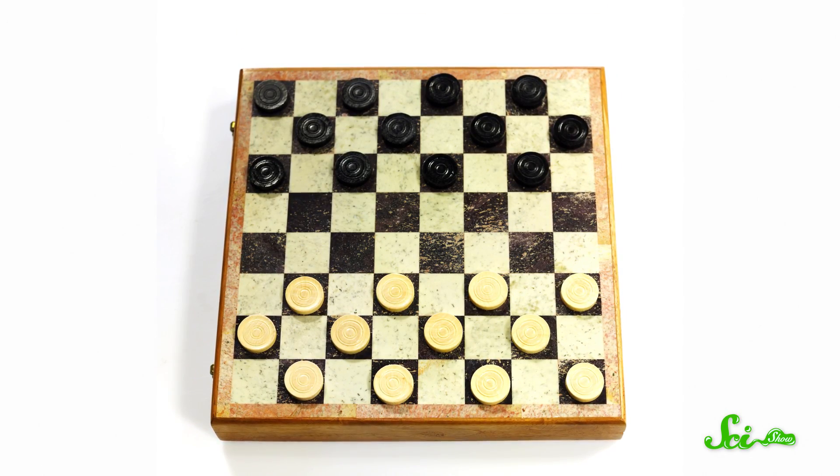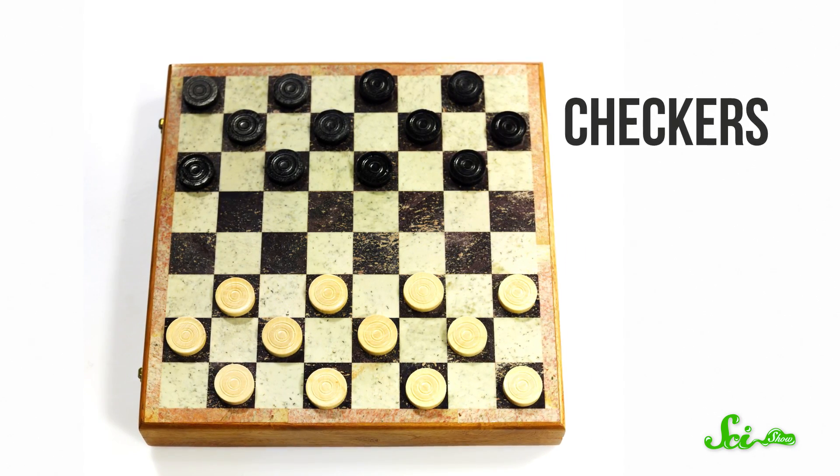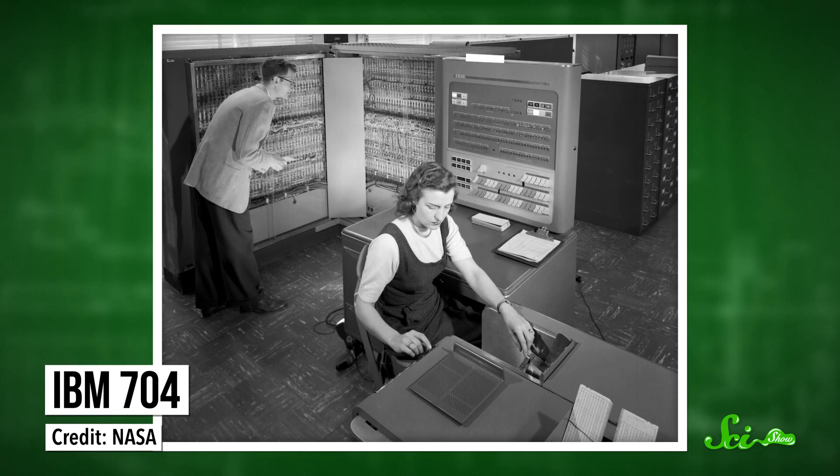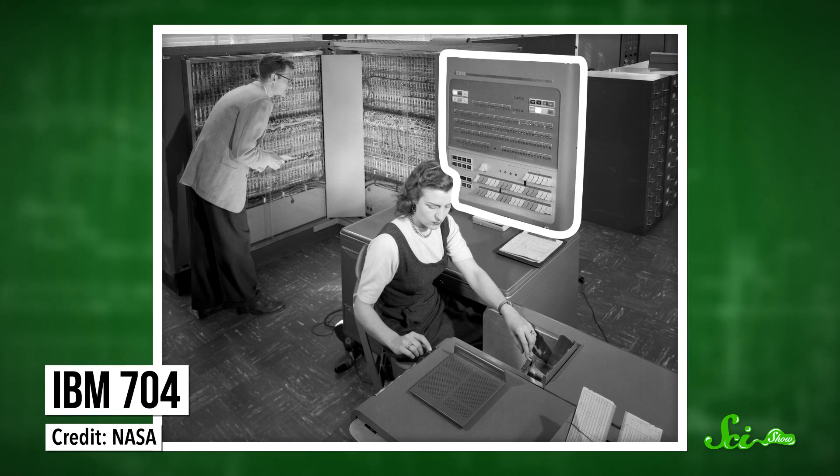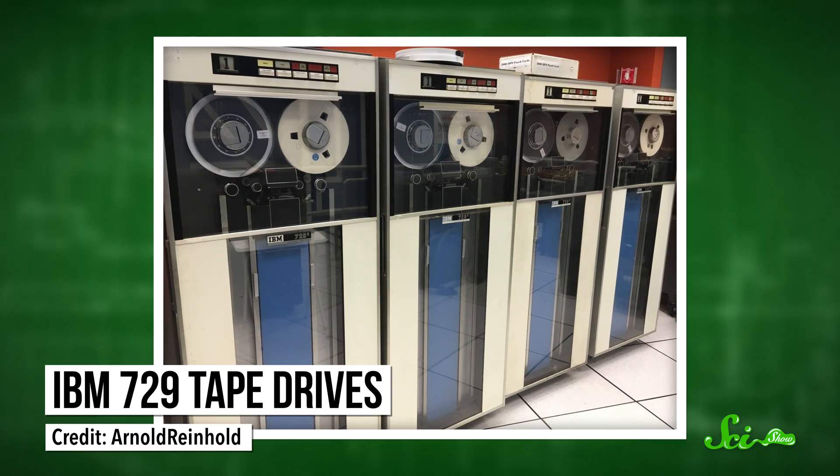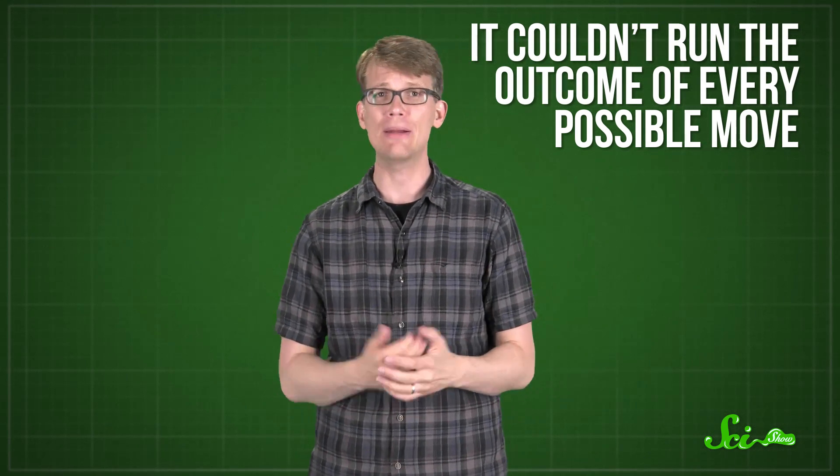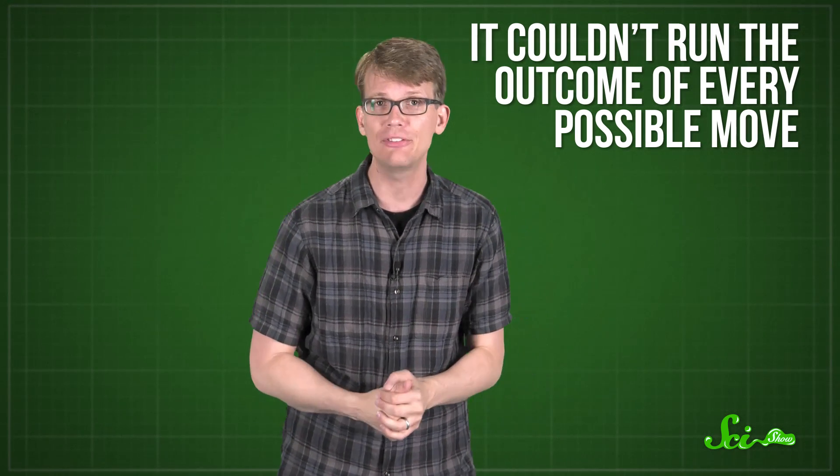The first game an AI ever played and won against a human opponent was a checkers program, written in the 1950s by American computer scientist Arthur Samuel for the IBM 704 computer. This was a machine that you had to program by feeding magnetic tape into a big drum. Checkers is a simple game, but the IBM 704 was a pretty simple machine. It couldn't run the outcome of every possible move it could make by trial and error in order to find the best one, at least not in a reasonable amount of time.